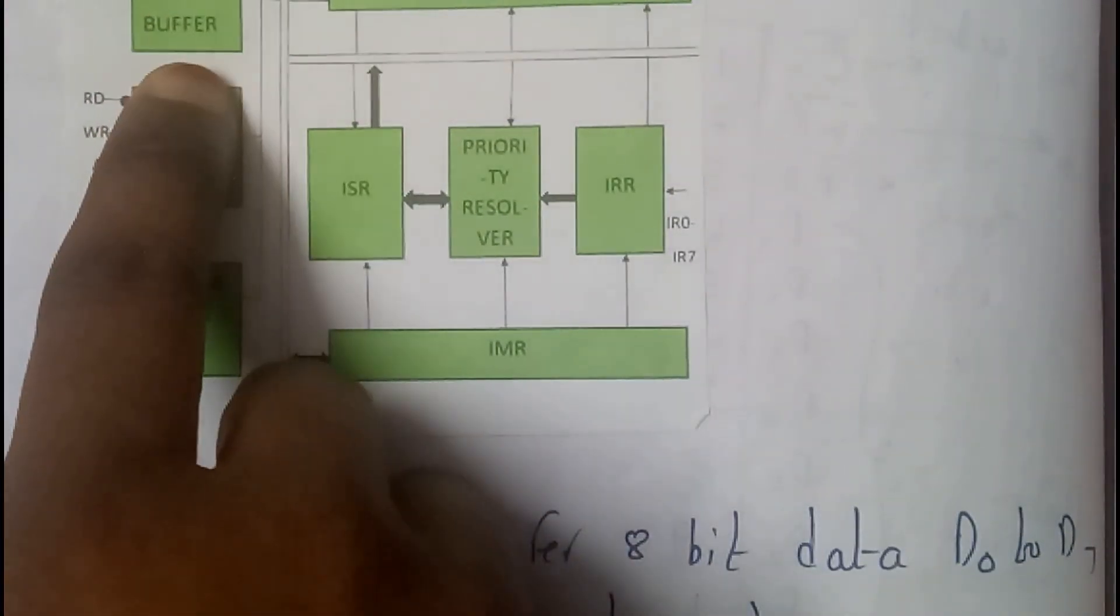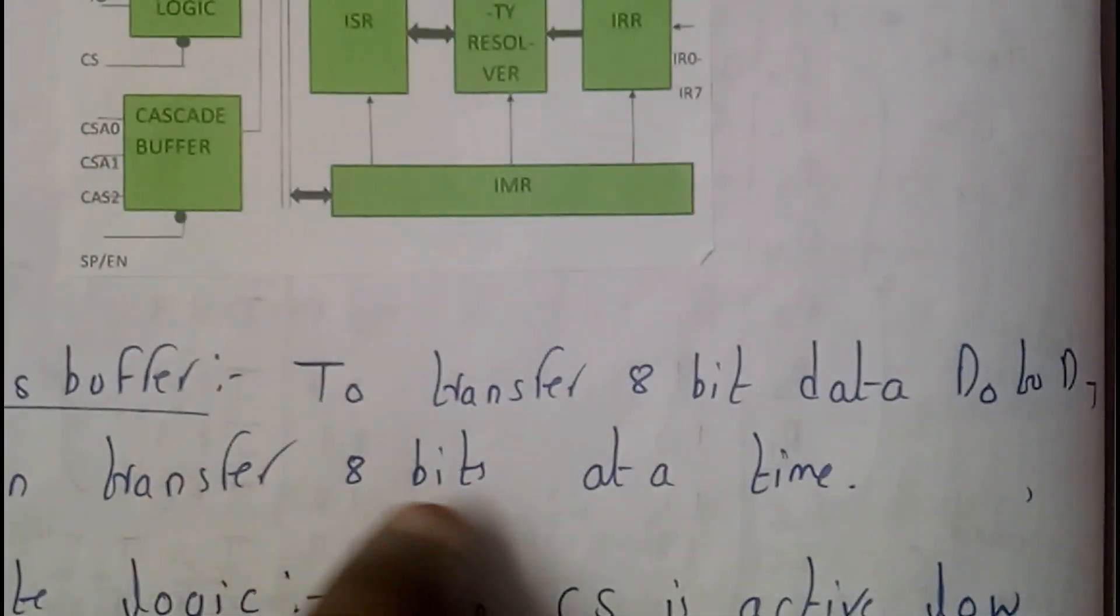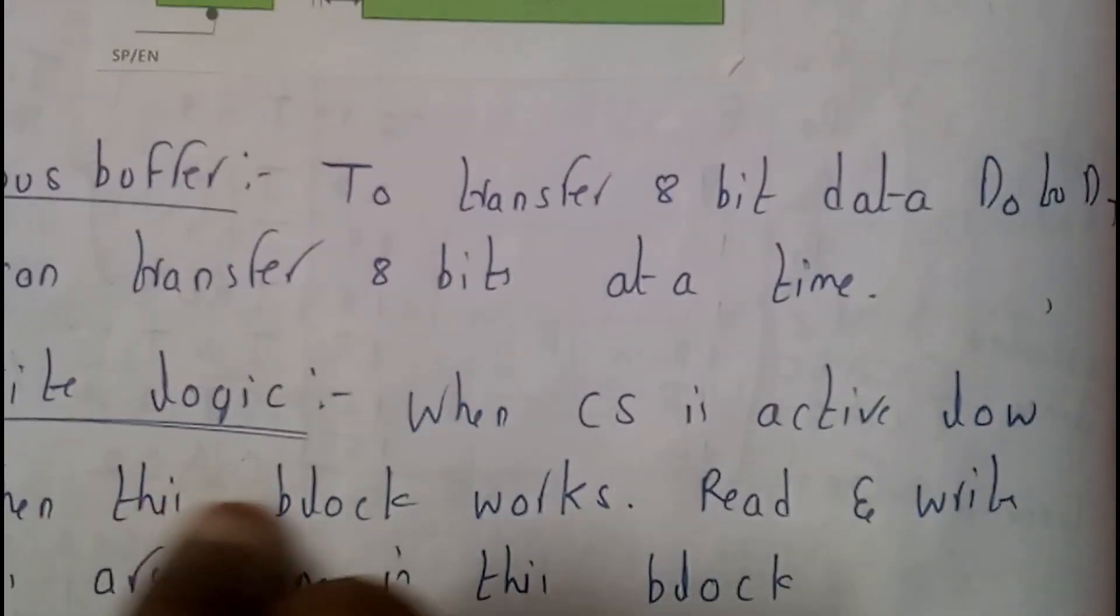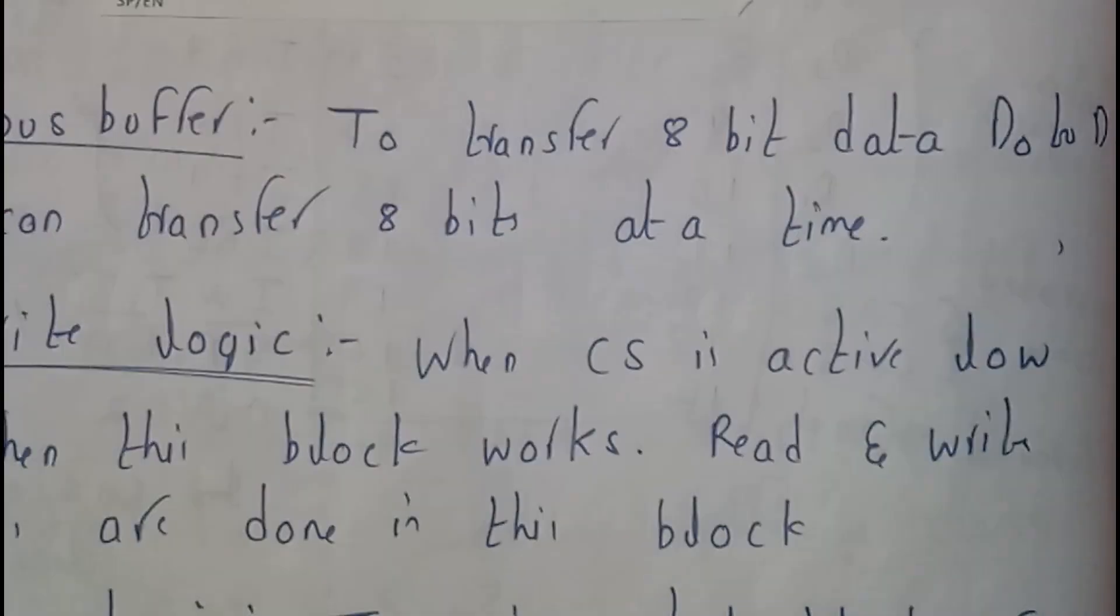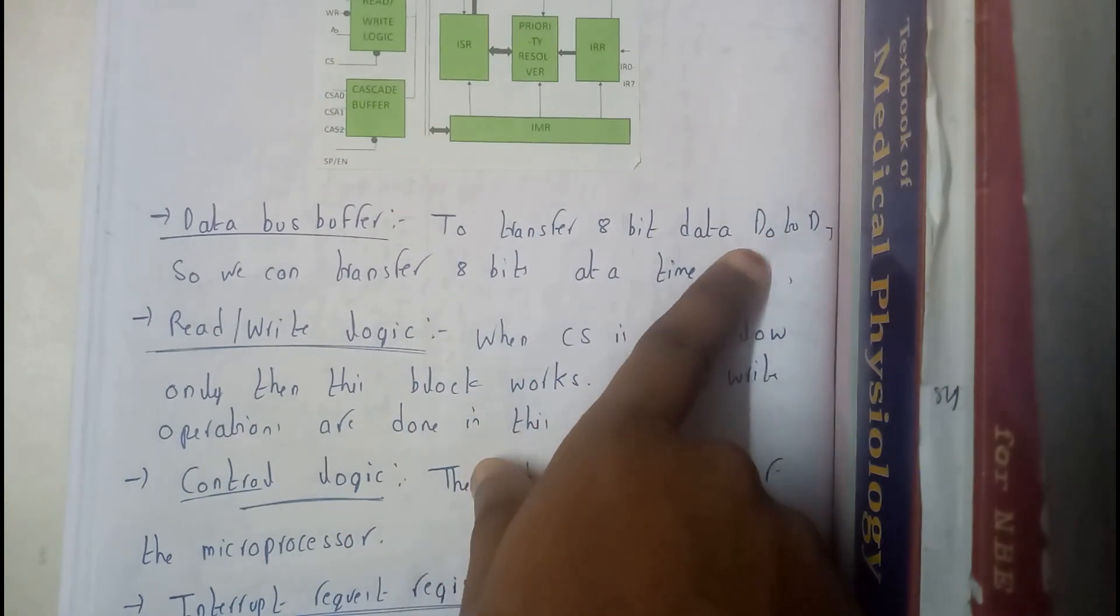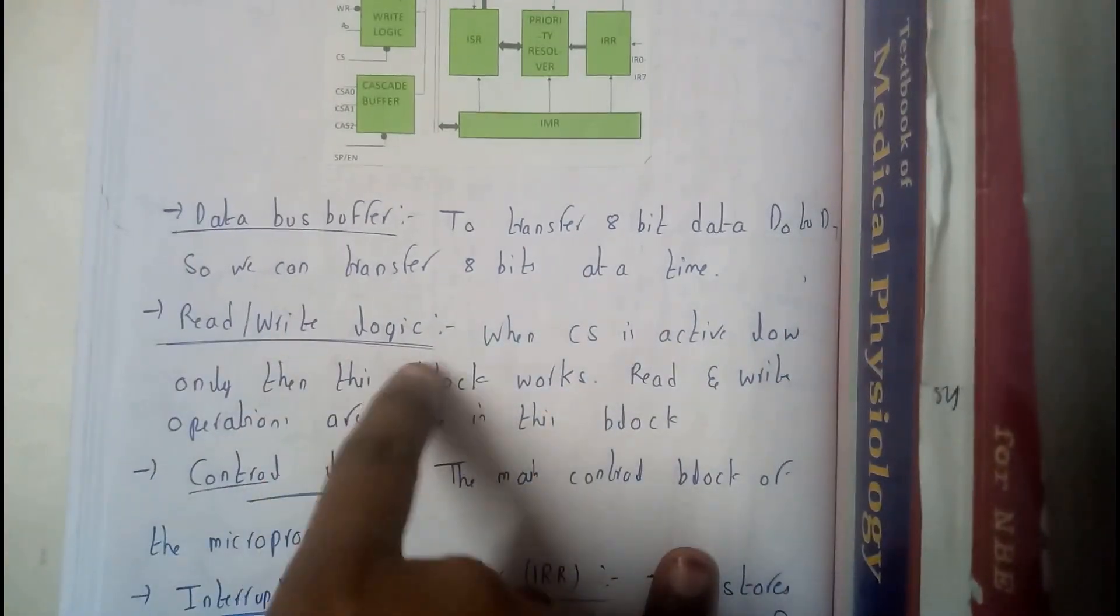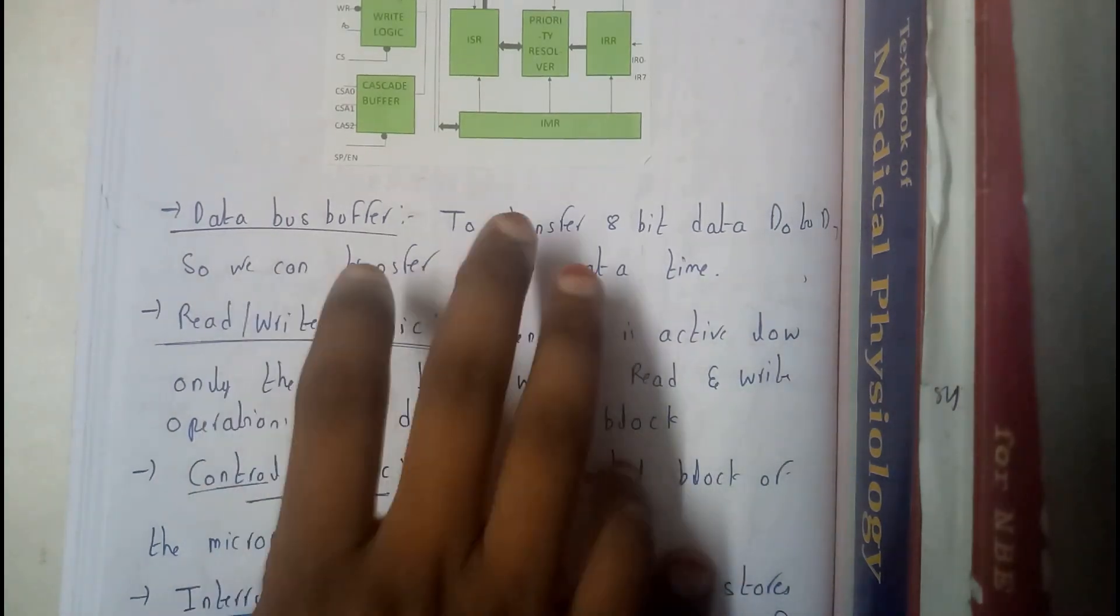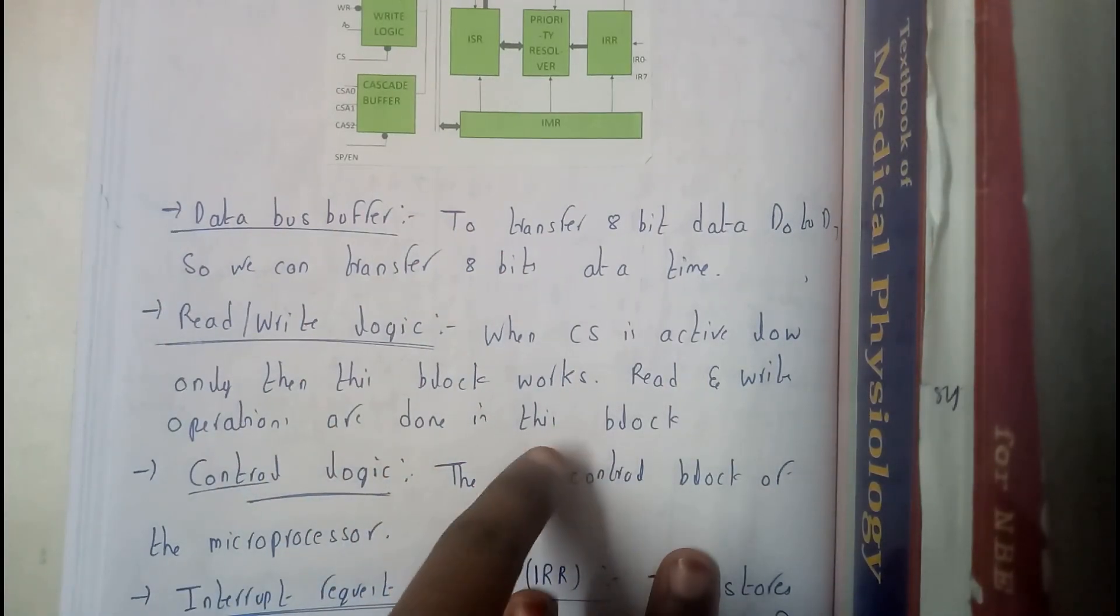So let us go first through data bus buffer. To transfer 8 bit data, that is nothing but D0 to D7. So we can transfer 8 bits at a time. Read or write logic - when CS is active low, only then this block works. In that situation, the block works and read and write operations are done in this block.